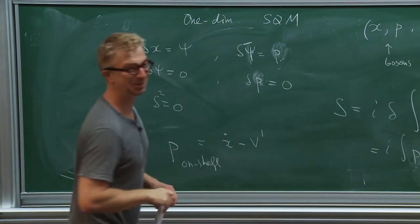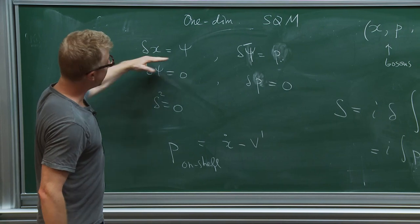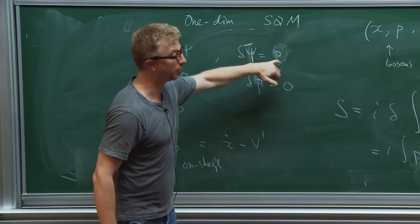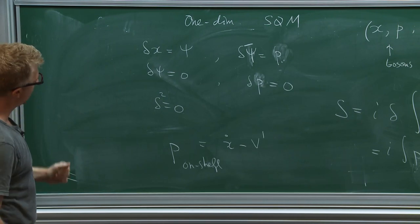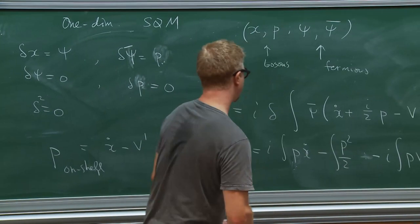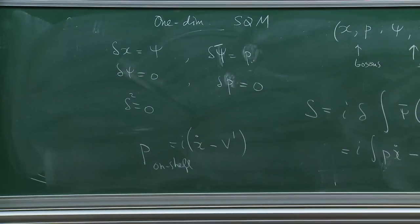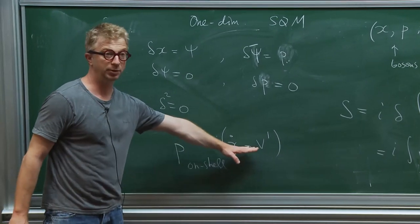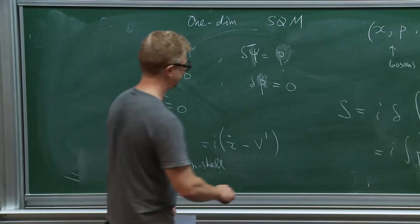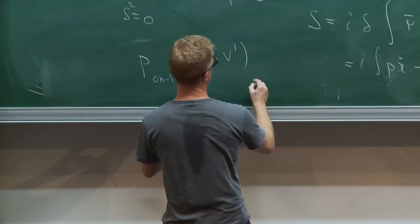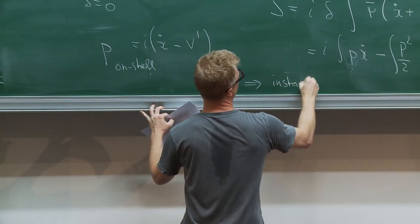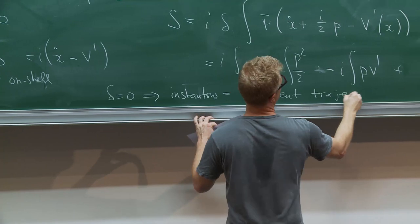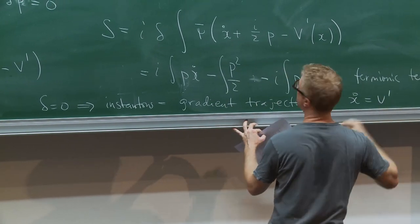Delta acts on the variable x as the de Rham differential from boson to fermion, and here it acts as the Cauchy-Riemann differential from fermion to boson. When you do the variation you get p equals i times this thing. The choice of the differential delta prefers instantons, which will be the locus in the space of fields where this expression vanishes — when delta equals zero, you get instantons. Instantons in this context means gradient trajectories, solutions of the equation x-dot equals V-prime.